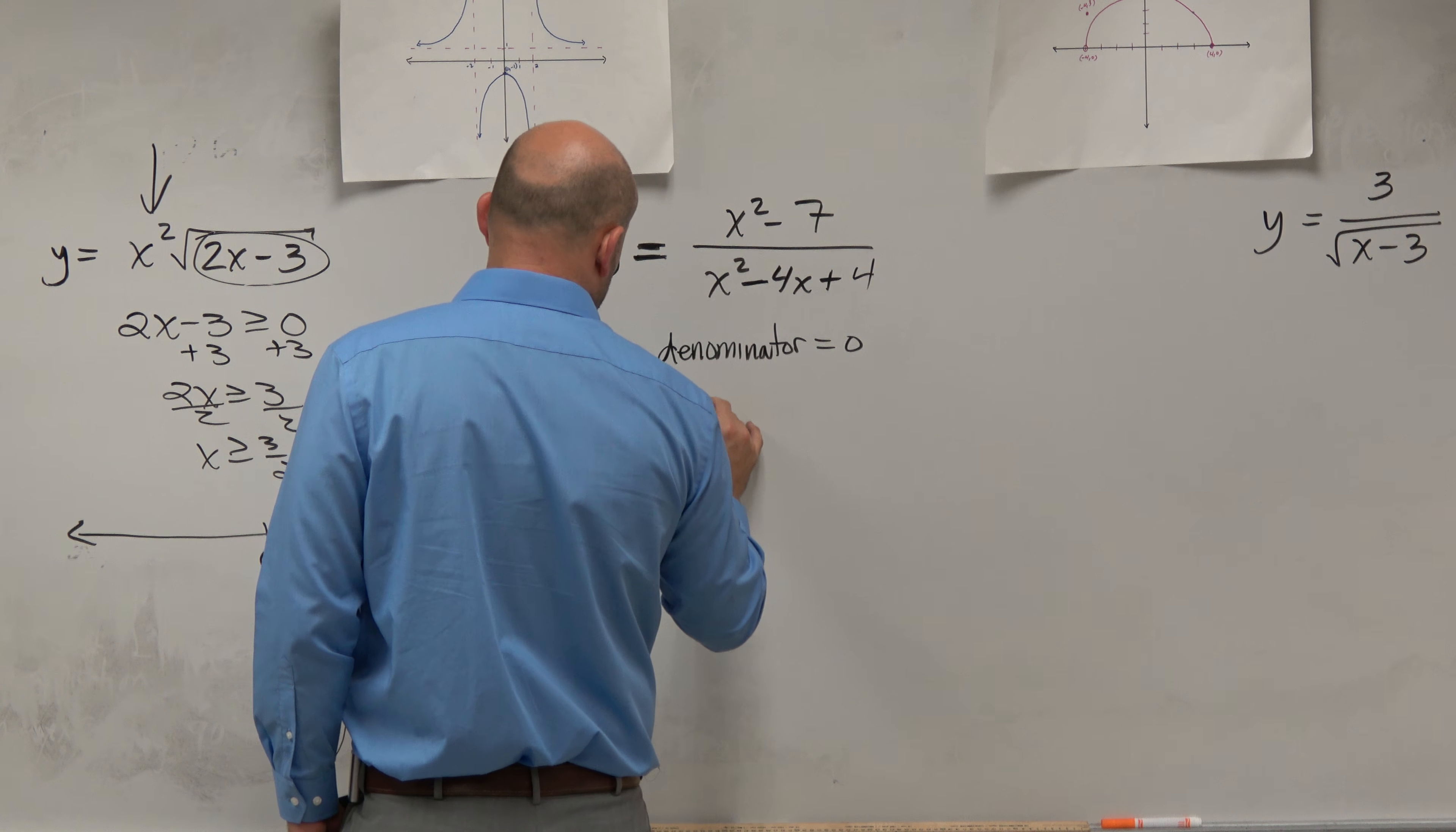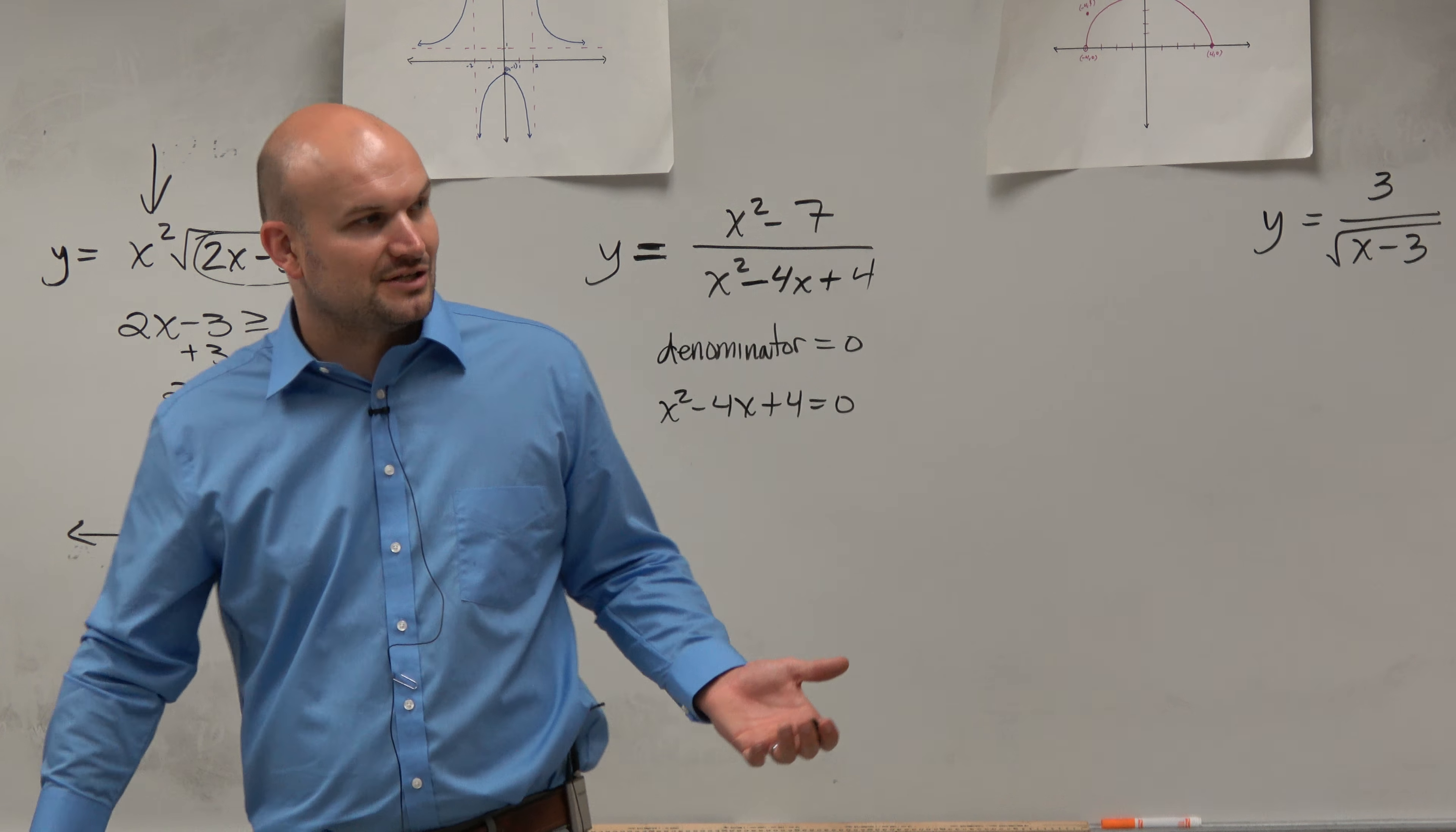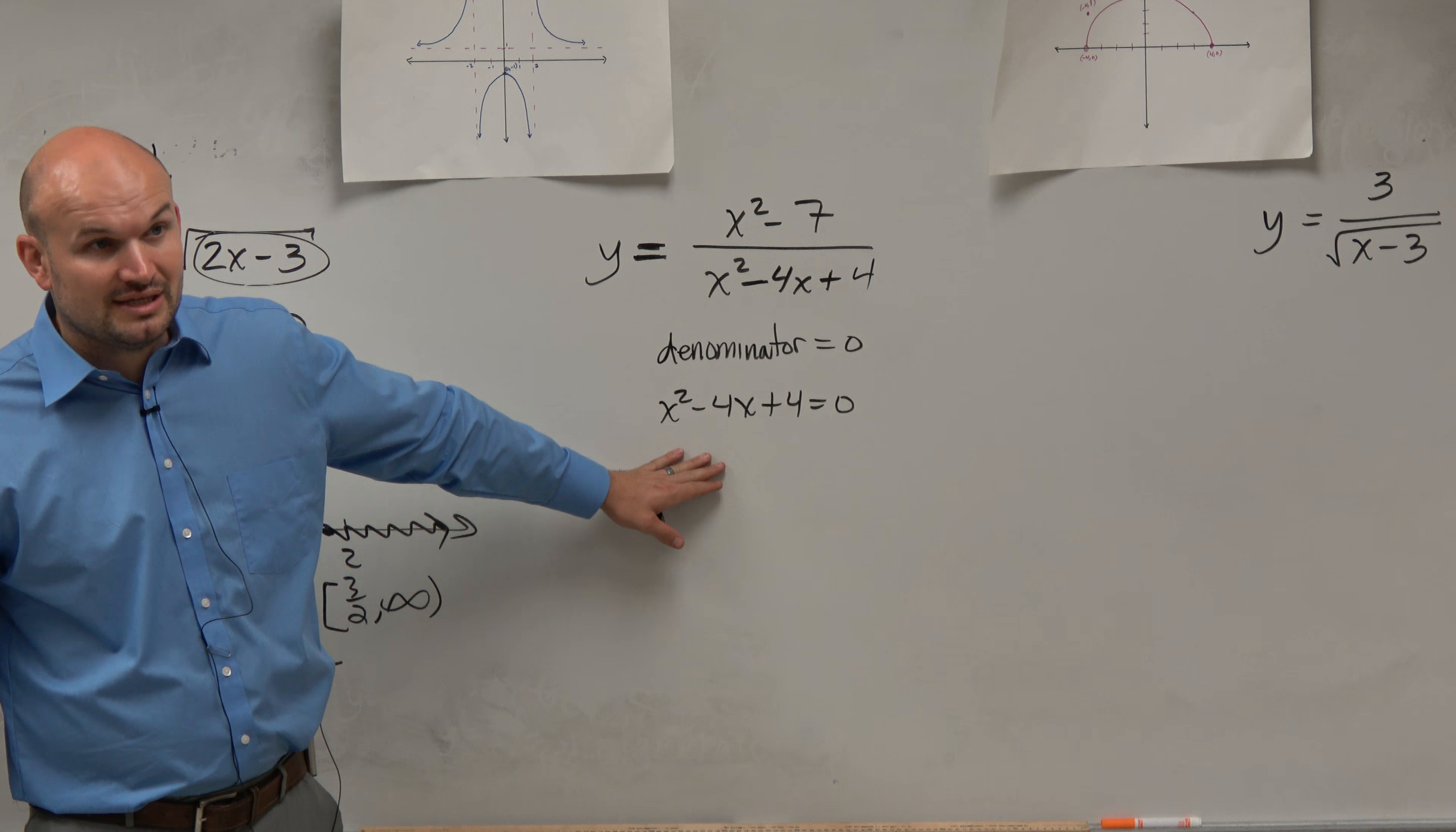So I take x squared minus 4x plus 4 equal to zero. It's like going back to algebra 2 now. Now we just need to factor and solve, right? You could have to use the quadratic formula. We could get some crazy problems in here. Fortunately for you, I chose a problem that's rather easily factorable.